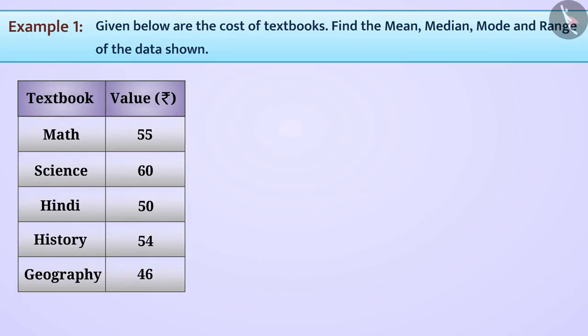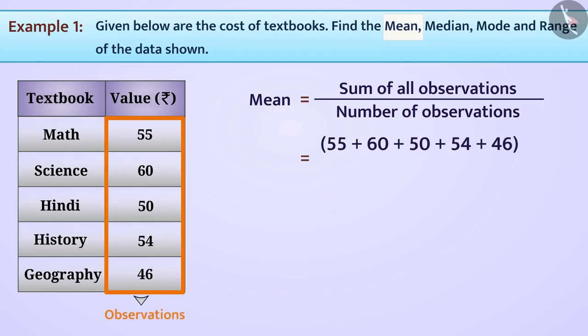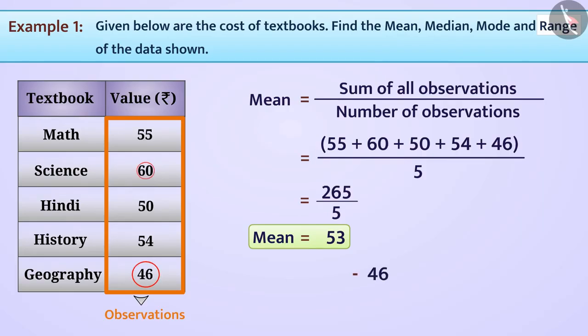We all know mean is equal to sum of all observations divided by number of observations. Using this formula, we can derive the mean of the values given in the table. The answer of this is 53. Let us also try deriving the range of this data by subtracting the smallest observation 46 from the largest observation 60. The range comes out to be 14.